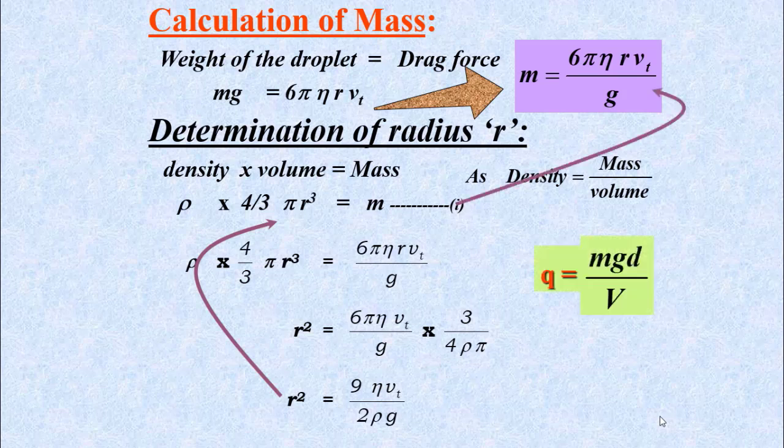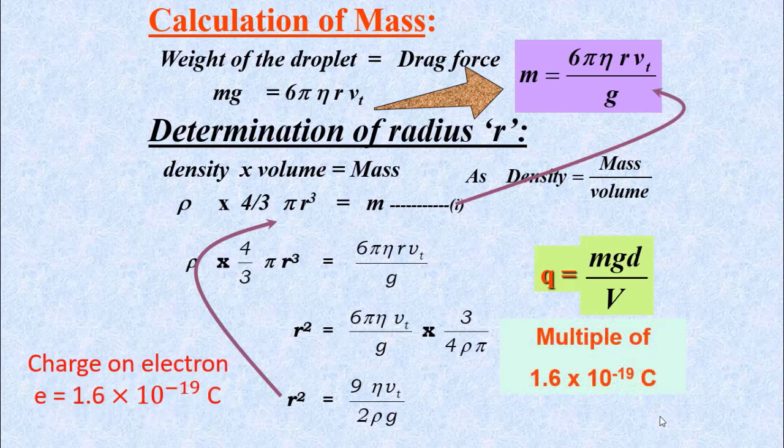Through his experiment, Millikan calculated the charge on many droplets. We can find out the charge on the electron, which is the minimum amount of charge: 1.6 into 10 to the power minus 19 coulomb. Students, we have studied gravitational and electric force, and hopefully you will know their similarities and differences.